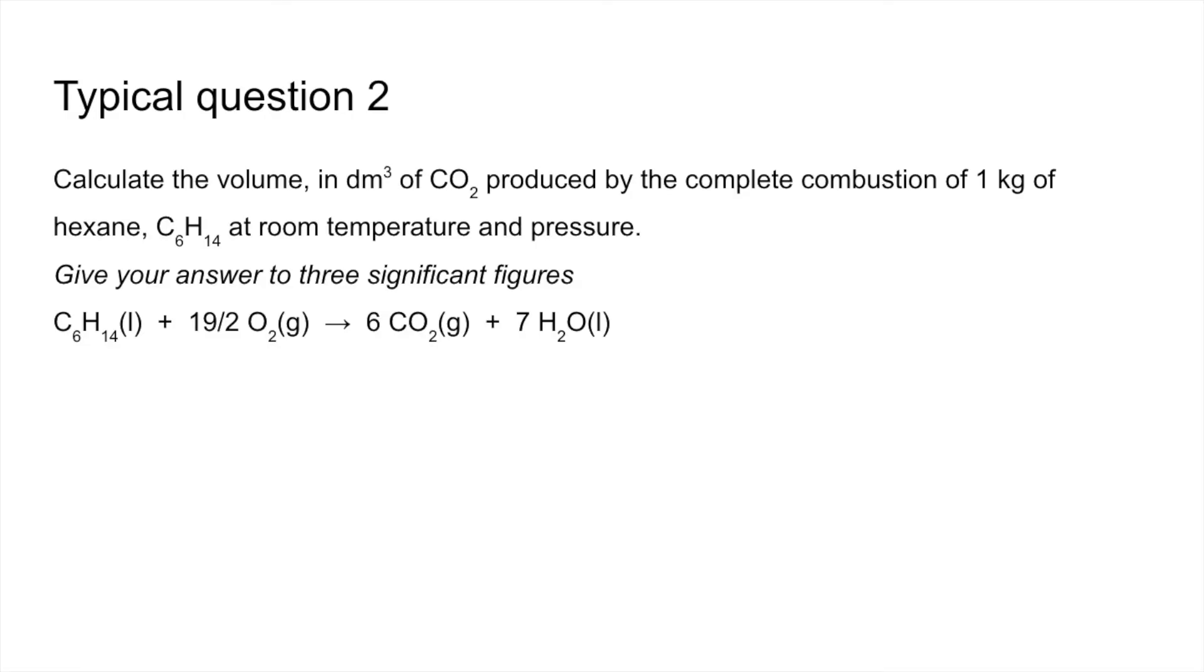The first thing I'm going to do is work out how many moles of hexane we've got. Mass over Mr. So there's that many moles of hexane. The mole ratio in the balanced equation tells us that for every mole of hexane we get six moles of CO₂. So we need to multiply the moles of hexane by six to get the moles of CO₂ produced.